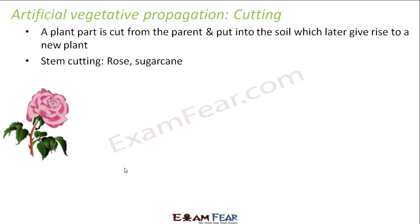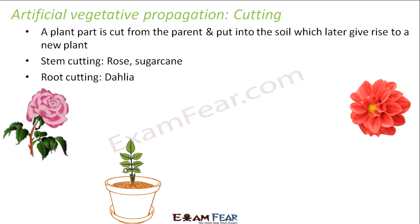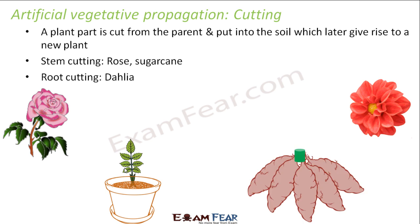Stem cutting is common for plants like rose and sugarcane. For rose plants, you just cut a branch or a stem and put it in soil to get a new plant. Root cutting is common for plants like dahlia — they have thick, fleshy roots. You cut a root and put it in a pot, and those roots give rise to a new plant. These are artificial vegetative propagation methods because human beings are forcing the plants to reproduce by cutting branches or roots and putting them in soil.